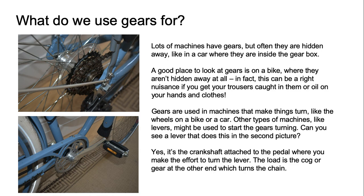What do we use gears for? Lots of machines have gears but often they are hidden away, like in a car where they're inside the gearbox. A good place to look at gears is on a bike where they aren't hidden away at all — in fact this can be a right nuisance if you get your trousers caught in them or oil on your hands and clothes. Gears are used in machines that make things turn, like the wheels on a bike or a car. Other types of machines like levers might be used to start the gears turning.